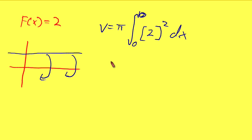which equals pi 0 to 10 of 4 dx, which equals pi 4x evaluated between 0 and 10, which equals 40 pi.